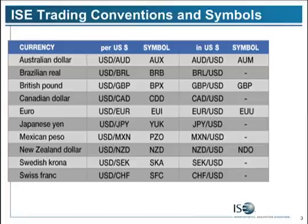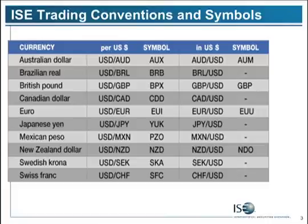If you're looking at the Australian dollar trading near parity, that pair is trading at 100 — whether it's AUX or AUM — but they're very different products. AUX will appreciate if the dollar rallies; AUM will appreciate if the dollar sells off or if the Australian dollar rallies. You need to get those straight before you implement any options trade.